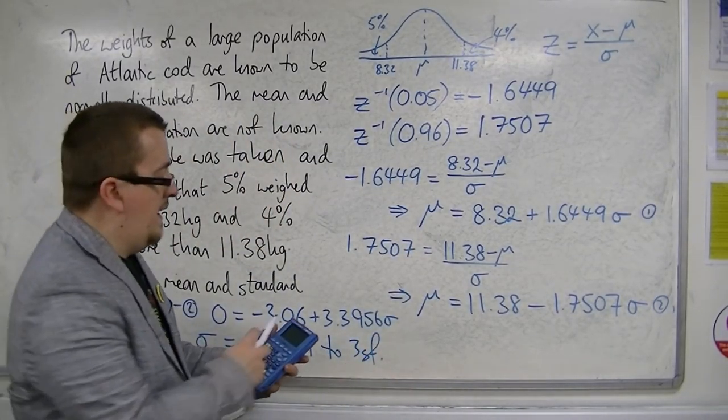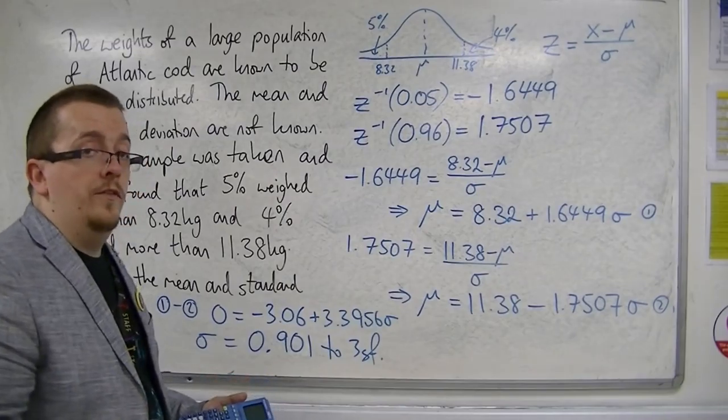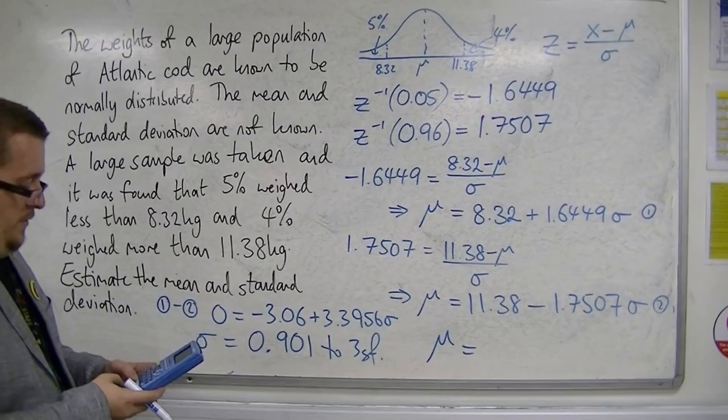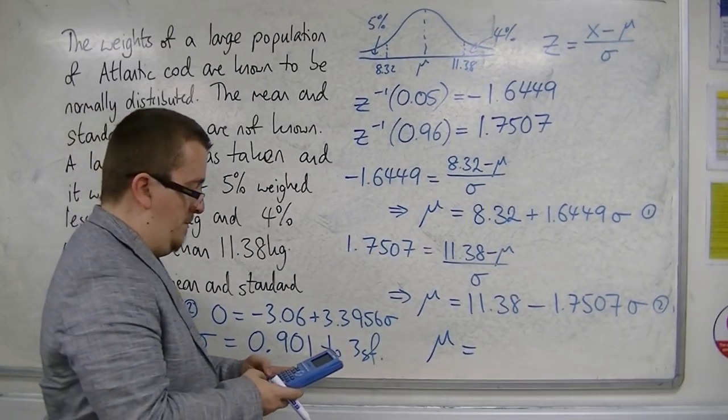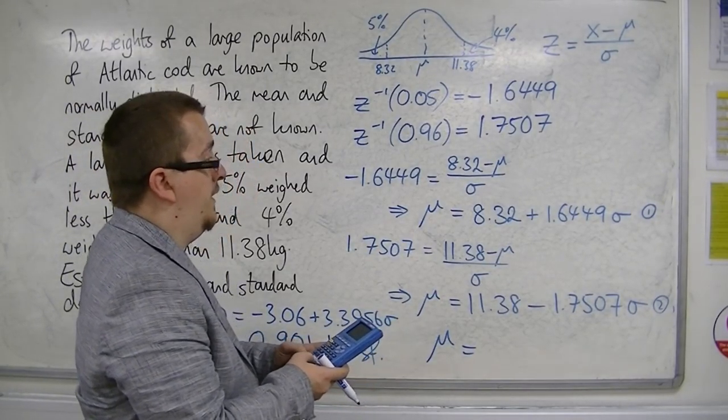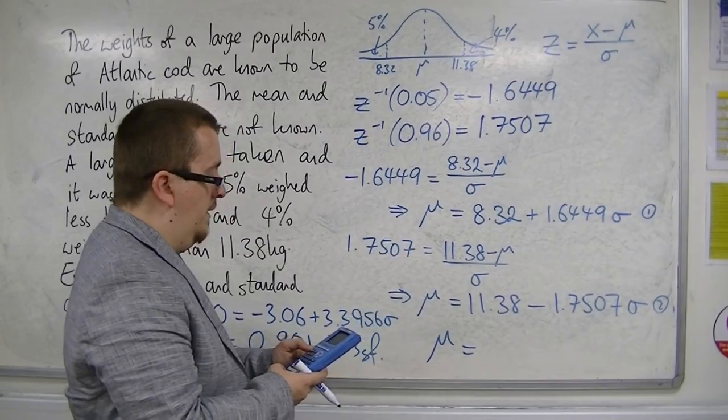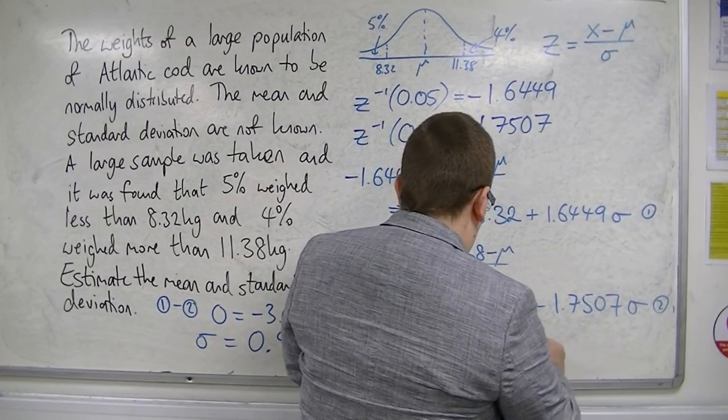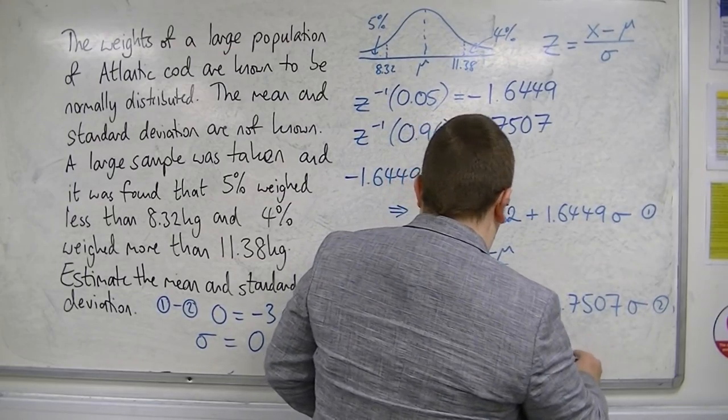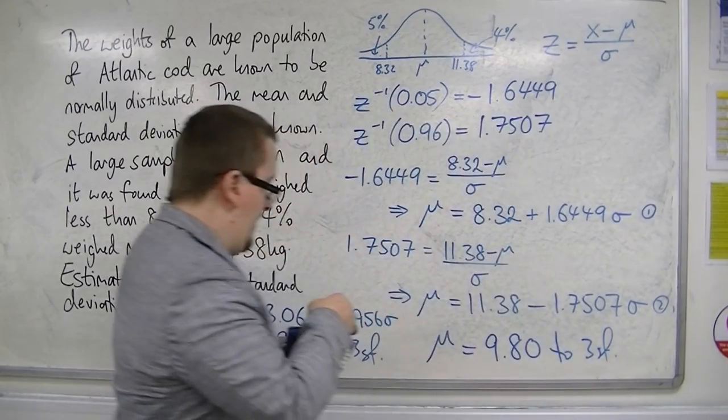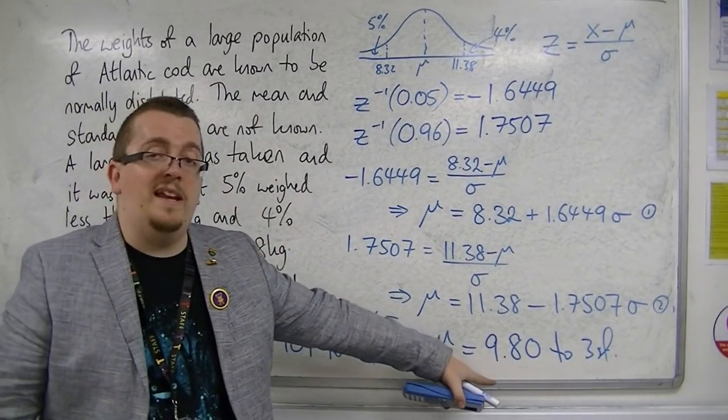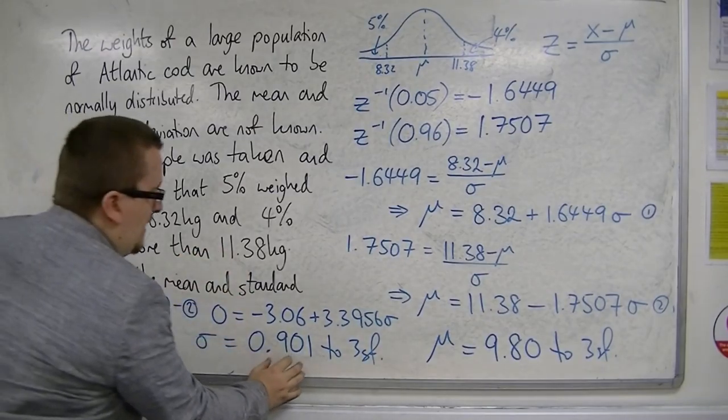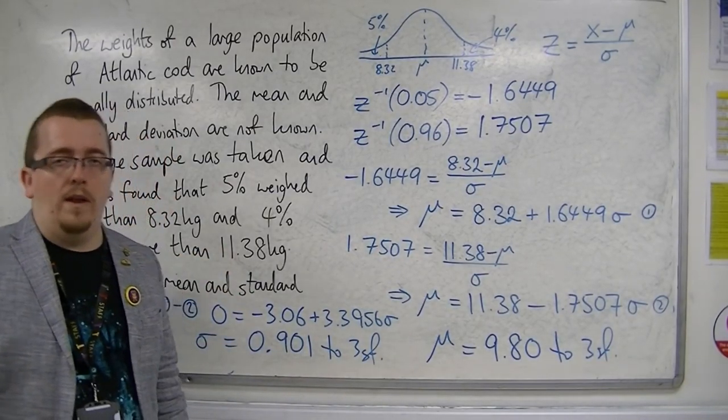And now, if I plug that value into one of the two equations, either 1 or 2, so I'm going to substitute into number 1, so 8.32 plus 1.6449 times the sigma is equal to 9.80. So, we would have a mean of 9.80 kilos, and we would have a standard deviation of 0.901 kilos.